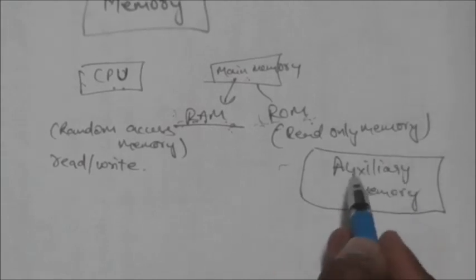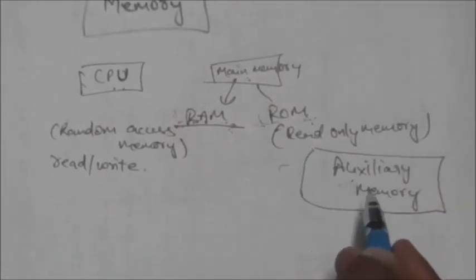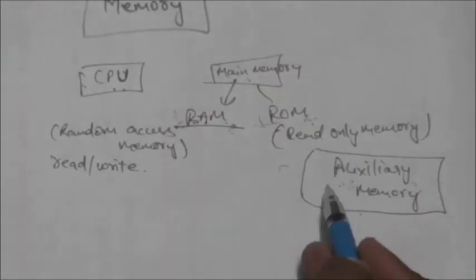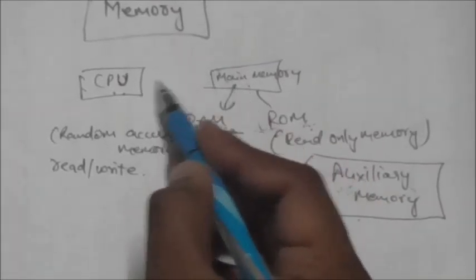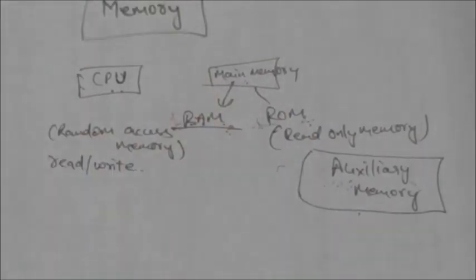Whenever data or a program is required by the CPU, that program and data is transferred from auxiliary memory to main memory. Whenever there is some data or program which is not required by the CPU, that data and program must be transferred from main memory to auxiliary memory.